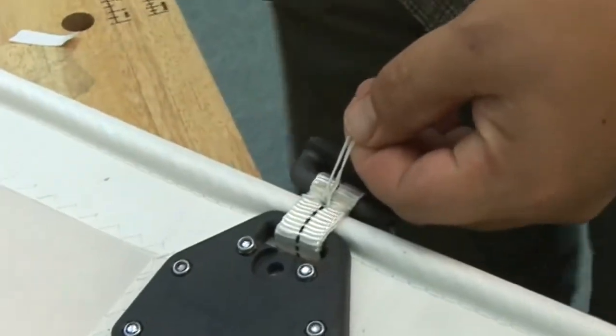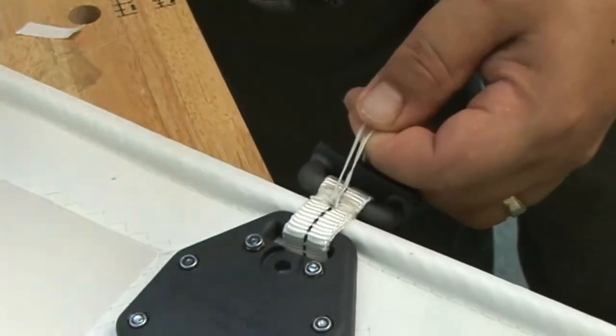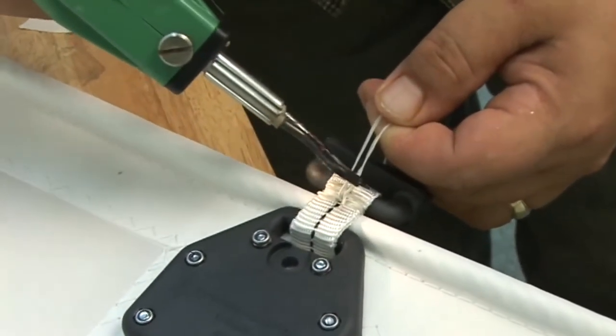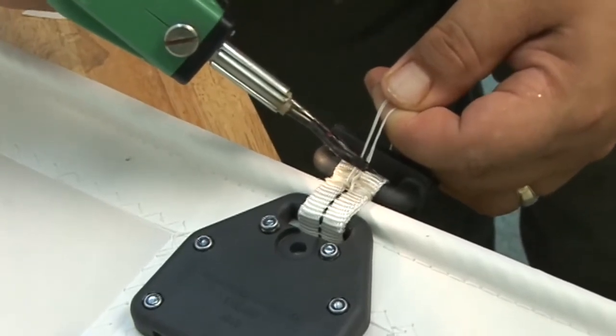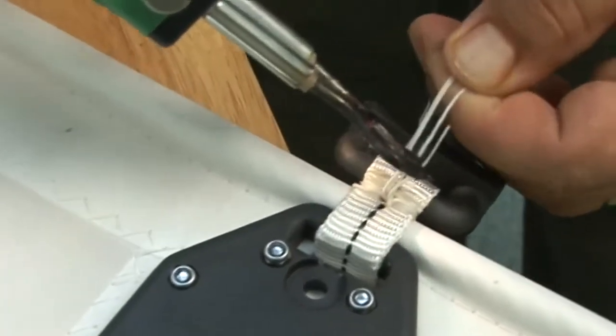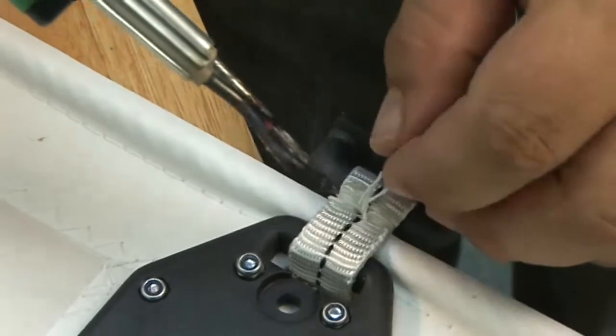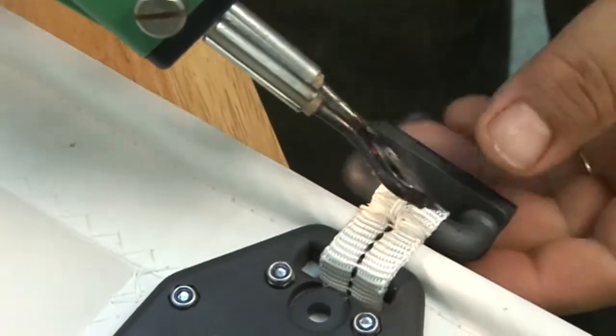Then we'll simply take a hot knife and cut that twine and melt it so that it creates a nice button. To create this button, we simply want to take the hot knife and melt the ends of the twine so it makes a nice button.